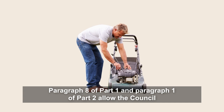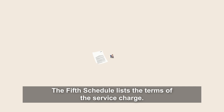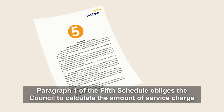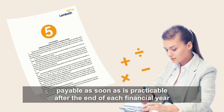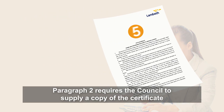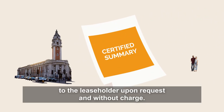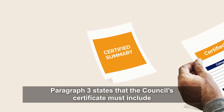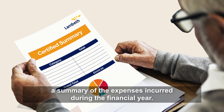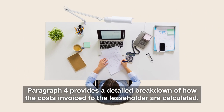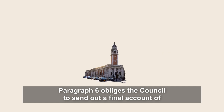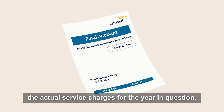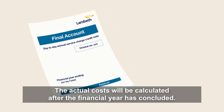Paragraph 8 of Part 1 and Paragraph 1 of Part 2 allow the council to add a management fee for these services. The fifth schedule lists the terms of the service charge. Paragraph 1 obliges the council to calculate the amount of service charge payable as soon as is practicable after the end of each financial year and to ensure that the service charge is certified. Paragraph 2 requires the council to supply a copy of the certificate to the leaseholder upon request and without charge. Paragraph 3 states that the council's certificate must include a summary of the expenses incurred during the financial year. Paragraph 4 provides a detailed breakdown of how the costs invoiced to the leaseholder are calculated. Paragraph 5 allows the council to send out estimated invoices for the year in question in advance. Paragraph 6 obliges the council to send out a final account of the actual service charges for the year in question. The actual costs will be calculated after the financial year has concluded.